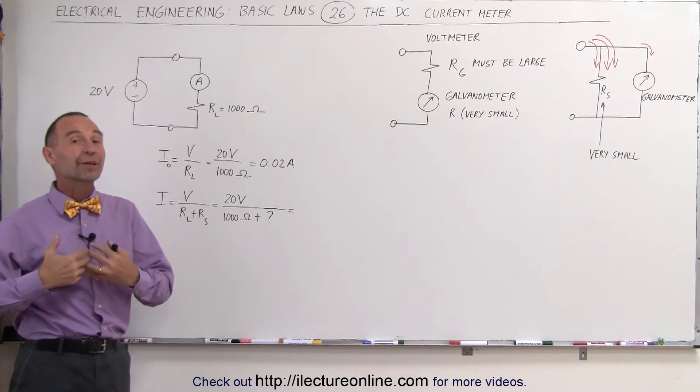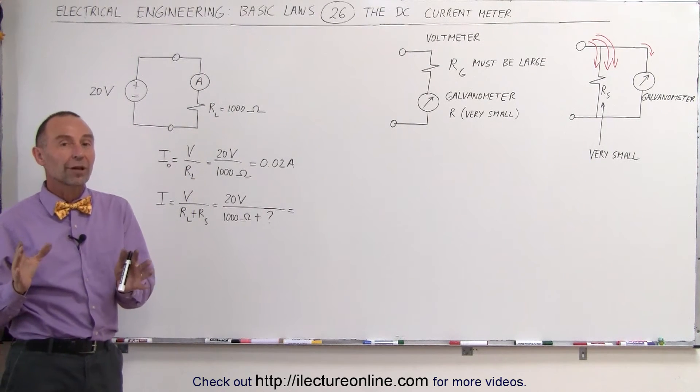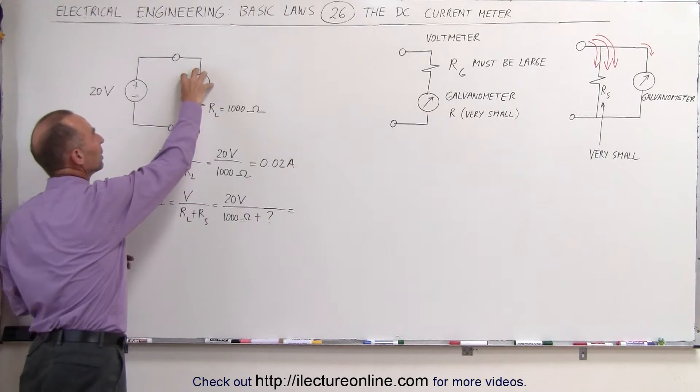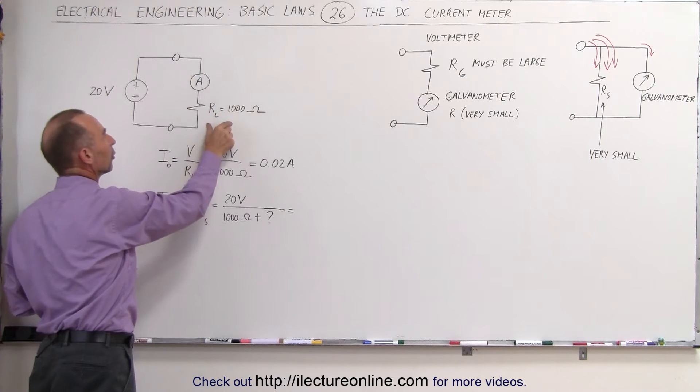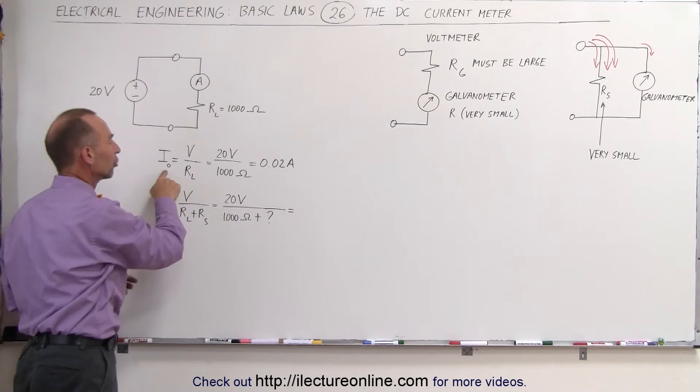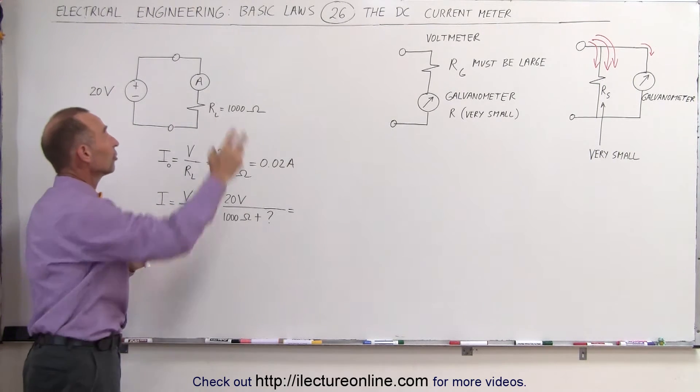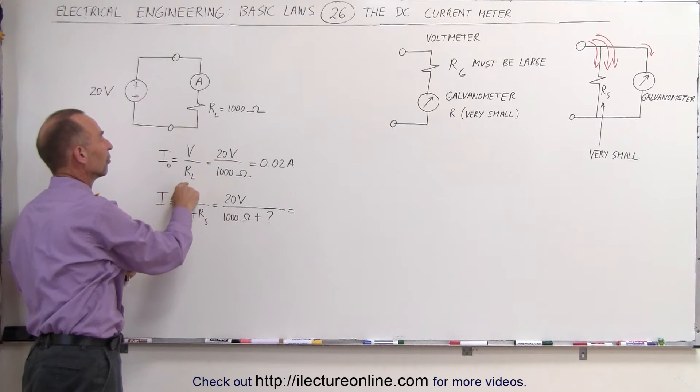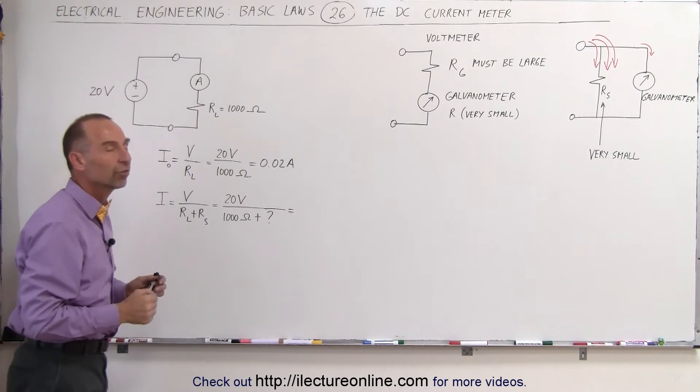So that means you'll probably be affecting the circuit, and you want to try and affect it as least as possible. Let's assume for a moment that the current meter is not in the circuit. The load resistor in the circuit is 1000 ohms, the source is 20 volts. The initial current before you put the current meter into the circuit would be equal to the voltage from the source divided by the load resistor. In this case, that would be 0.02 amps.